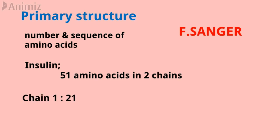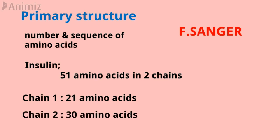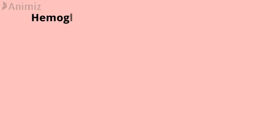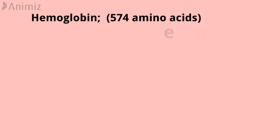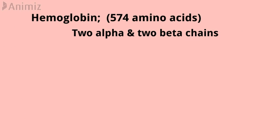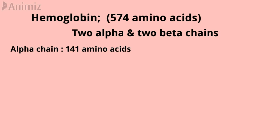One chain had 21 amino acids and the other had 30 amino acids, and they were held together by disulfide bridges. Hemoglobin is composed of four chains — two alpha and two beta chains. Each alpha chain contains 141 amino acids, while each beta chain contains 146 amino acids. The size of a protein molecule is determined by the type and number of amino acids comprising that particular protein molecule.